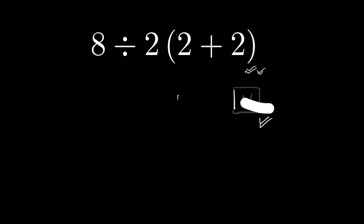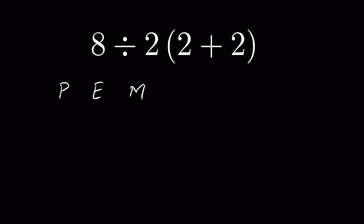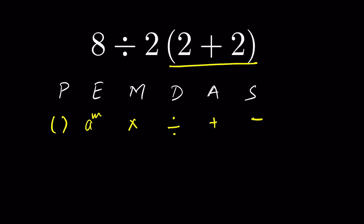Let's solve this and see where we make the mistake. As per PEMDAS: P stands for Parenthesis, E for Exponent, M for Multiplication, D for Division, A for Addition, and S for Subtraction. First we solve parenthesis, then exponents, indices, roots, multiplication, division, addition, subtraction. You can also follow PEDMAS, which is the same rule: Parenthesis, Exponent, Division, Multiplication, Addition, Subtraction.